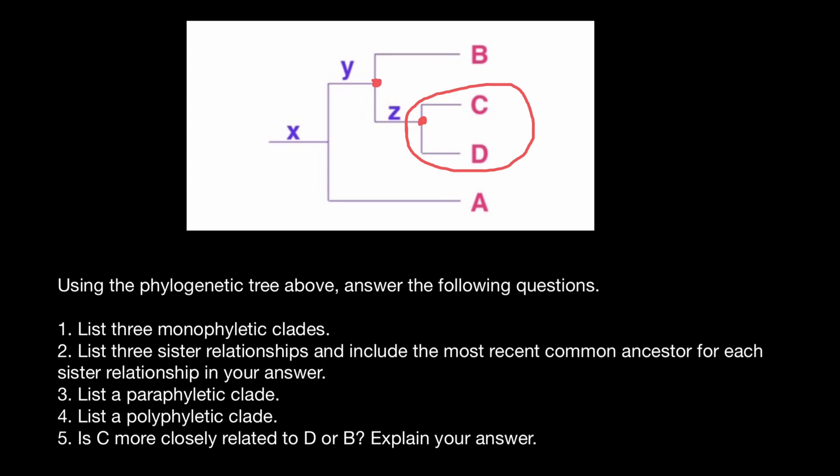And here is going to be the second one. Again, we include all the descendants of this recent common ancestor of the species B, C, and D.